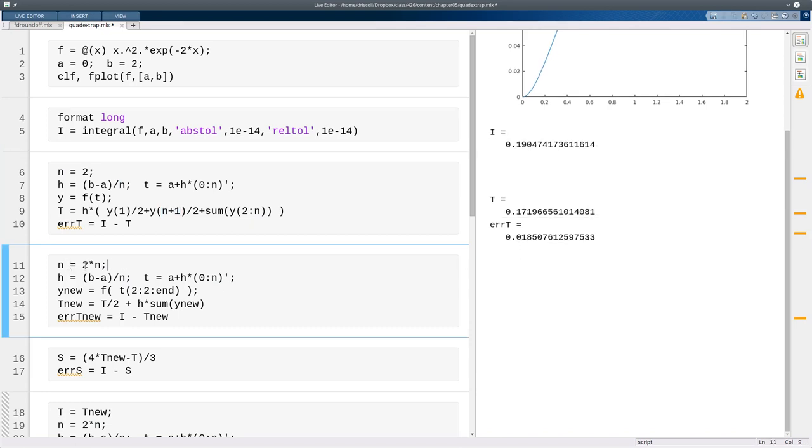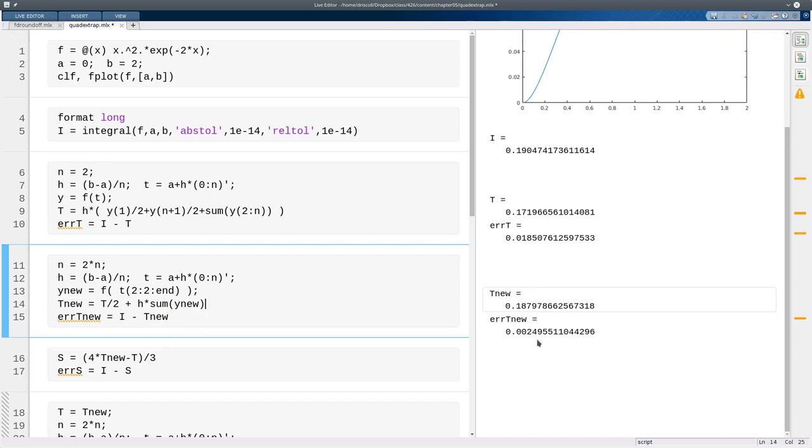Now, I will double n, which means I need to recompute the nodes. But as I just showed, you don't have to recompute all the function values. You don't even have to refer to the old function values anymore. They're all stored in t for us. So I'm just going to evaluate f at every other node starting from the second. And then the new value of the trapezoid estimate is one-half times the old plus h times the sum of the new values. And here we see that that is a good deal more accurate. If n were larger, we would expect this to go down by a factor of about 4 for a second-order method.